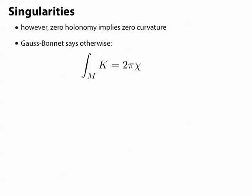Unfortunately, the Gauss-Bonnet theorem says that we have to have 2π times the Euler characteristic of curvature over our entire surface. So, unless we're on a torus, we're going to have to figure something else out.